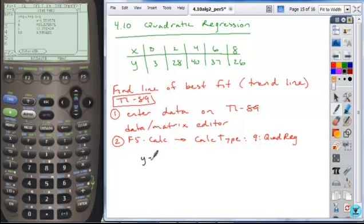So my answer is going to be Y equals negative 1.5536X squared. My B value is 15.1786, approximately X. And my C value was 3.3714, approximately.